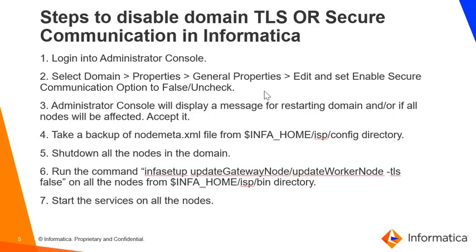The administrator console will display a message for restarting the domain and nodes to take it into effect. We will have to accept it. Take a backup of the node.xml file from the Informatica home ISP config directory. Shut down all the nodes in the domain. Run the command infosetup update_gateway_node or update_worker_node -tls false on all the nodes from the Informatica home ISP bin directory. Then start the services on all of the nodes.